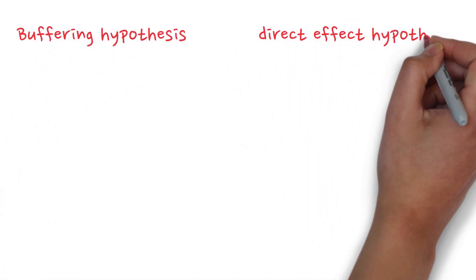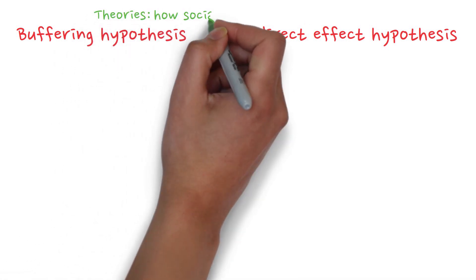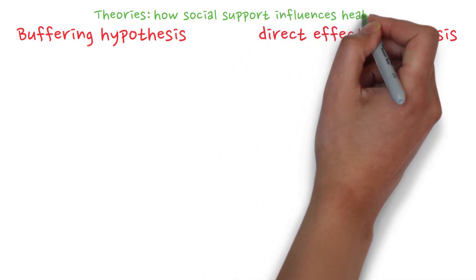Hi! Today we will talk about the buffering hypothesis and direct effect hypothesis. First of all, what is it about? Well, there are two theories developed to answer the question of how social support influences health.